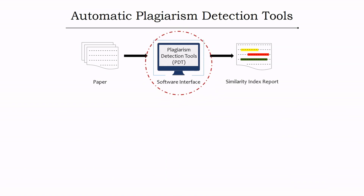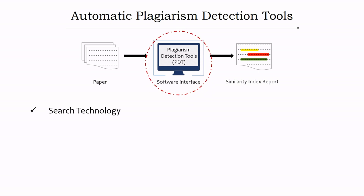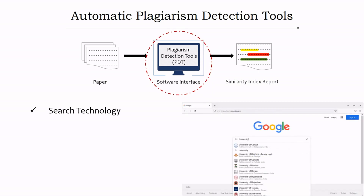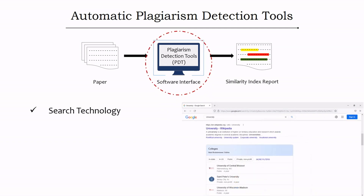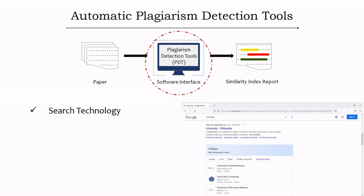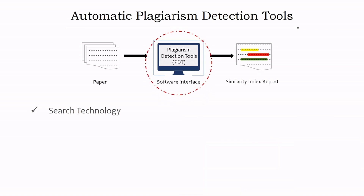Looking at individual detection methods — the first is search technology. Just as a search engine like Google displays millions of results for a query from its database, plagiarism detection tools use search technology to find plagiarized content in the document.